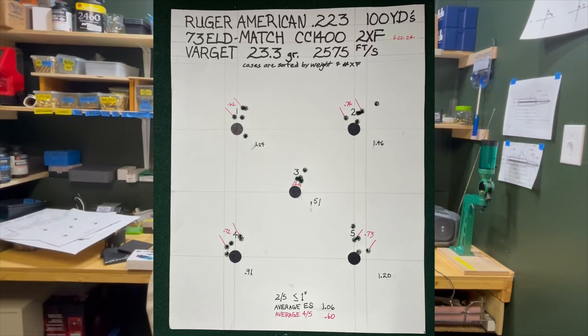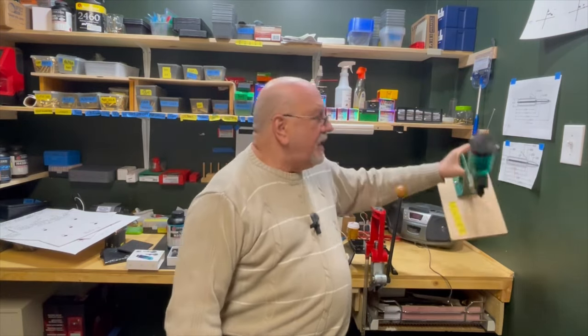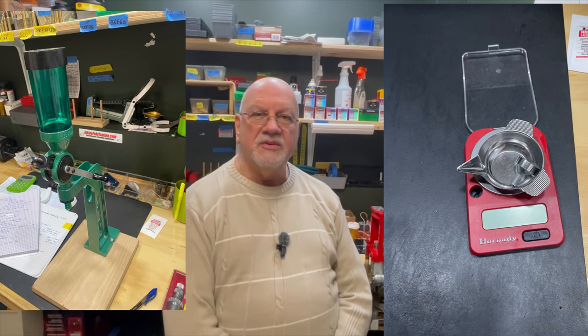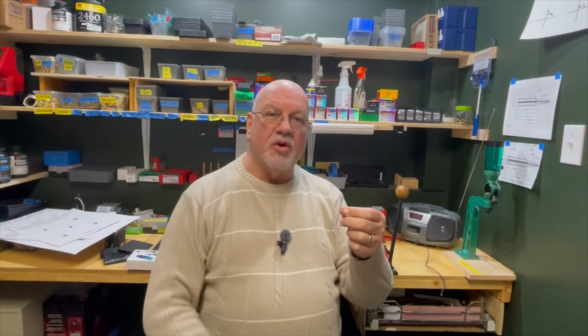One thing I will say which is different when I loaded those first 25 rounds of H335, I did so dispensing directly from the RCBS Uniflow powder dispenser. So I used the dispenser and a digital scale to make sure that the dispenser was throwing the proper charge weight, and then I dispensed each of those loads directly into the case by putting the case mouth up to the powder dispenser and pulling the charging handle. Every one of those were within a tenth of a grain of accuracy.